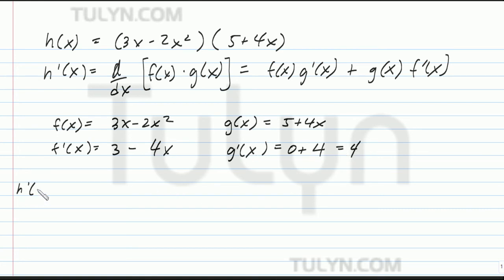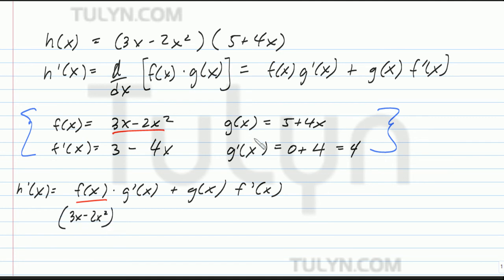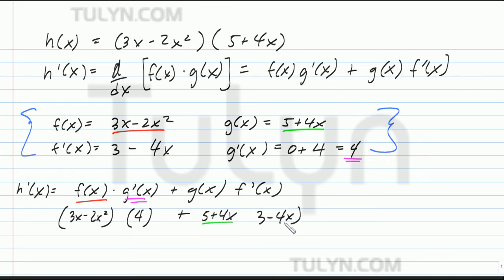Now go ahead and multiply. h prime of x equals f of x times g prime of x plus g of x times f prime of x. We have everything we need. So f of x is (3x minus 2x squared) times g prime of x, which is 4, plus g of x, which is (5 plus 4x), times f prime of x, which is (3 minus 4x).